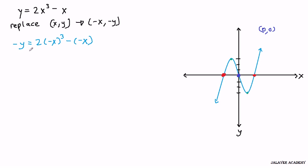Now let's proceed and just simplify this equation. We have negative y equals, well, negative x cubed is negative x cubed. Because if you multiply negative x by negative x, you get positive x squared. And then if you multiply it by one more negative x, you get back to negative x cubed.